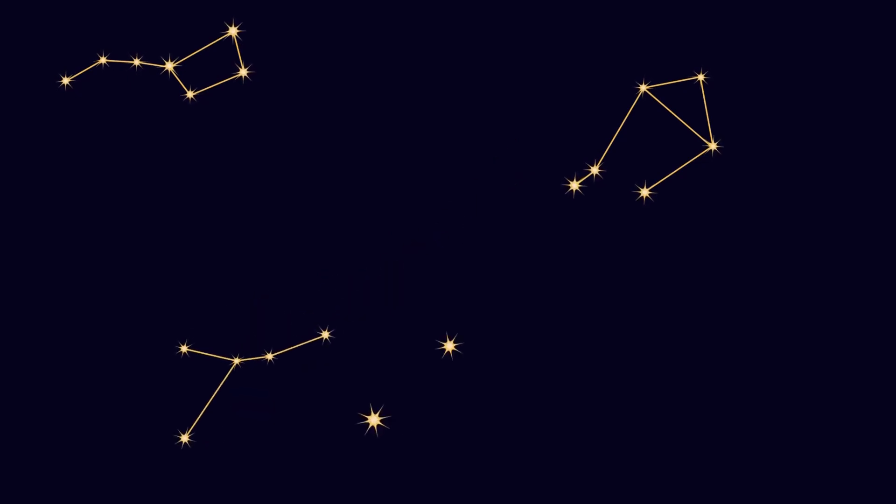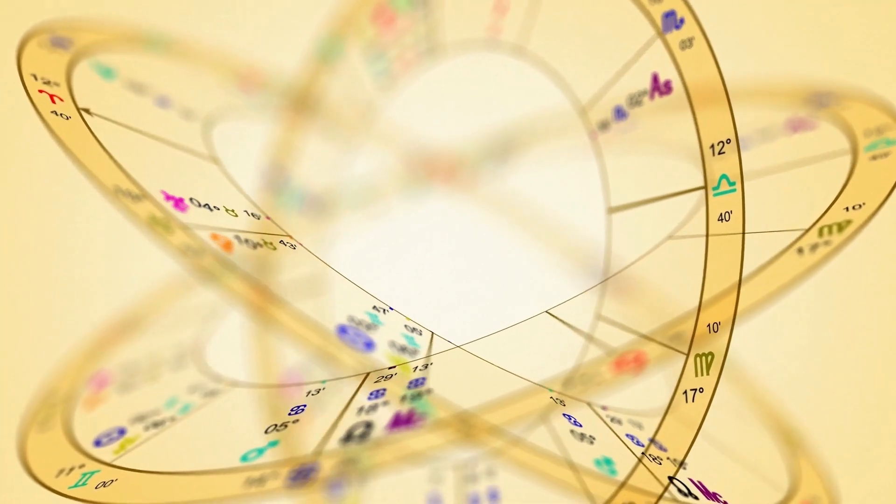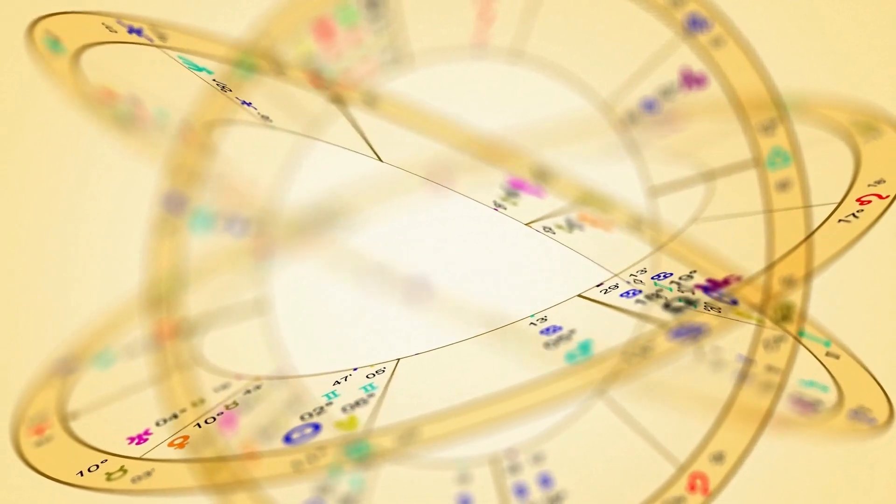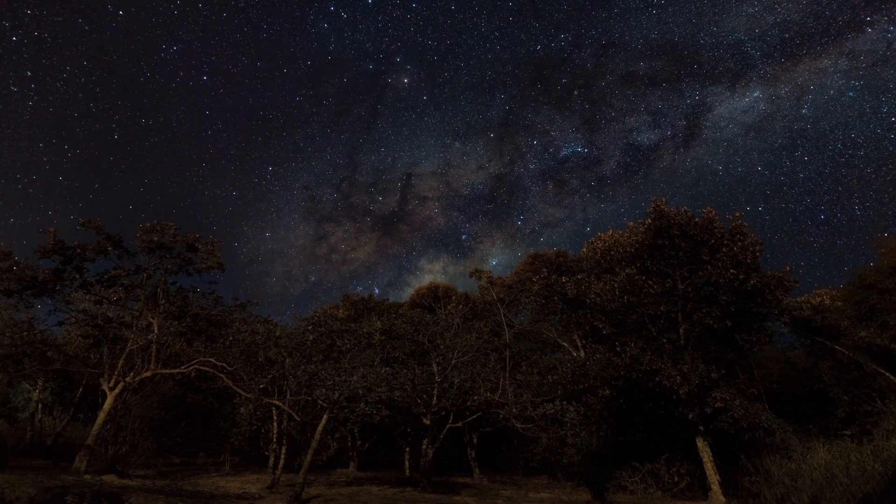Since stars can form and die, if you go back in time far enough, the constellations we can currently see would not exist. If the dinosaurs had developed their own form of astrology, it would be far different from what humanity developed due to a different night sky.